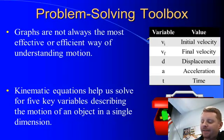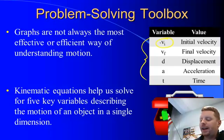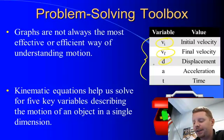We're going to deal with five variables that are going to describe the motion of an object moving in a straight line at constant acceleration: initial velocity vi, final velocity vf, displacement d, acceleration a, and t for the time elapsed.